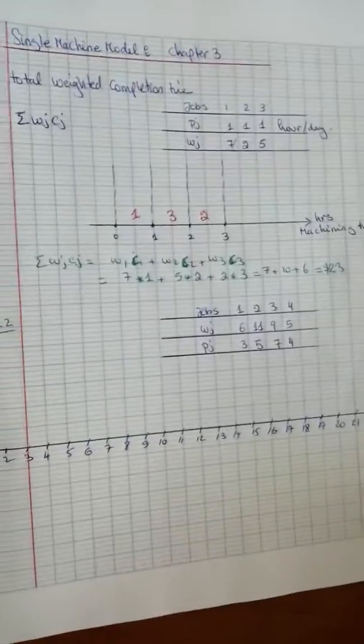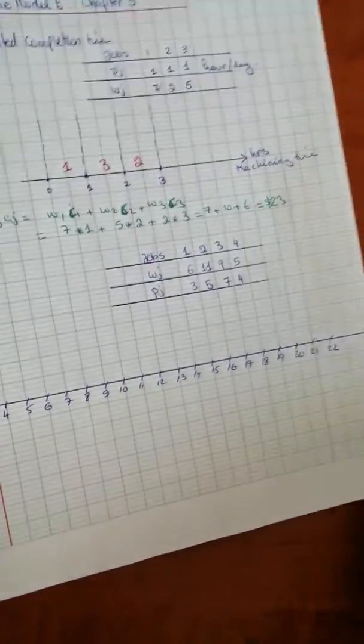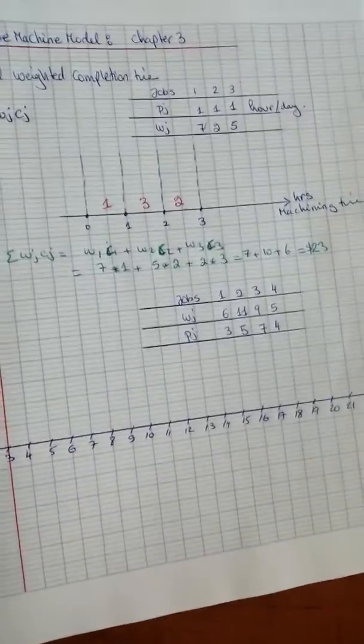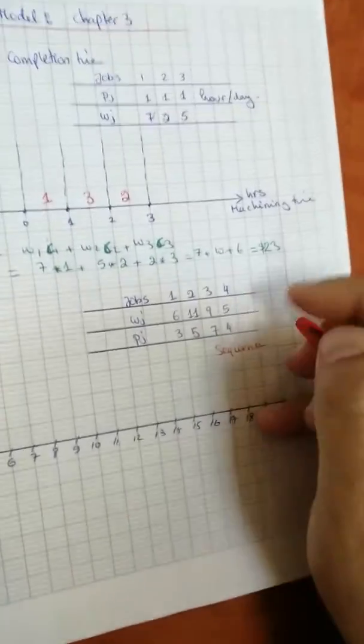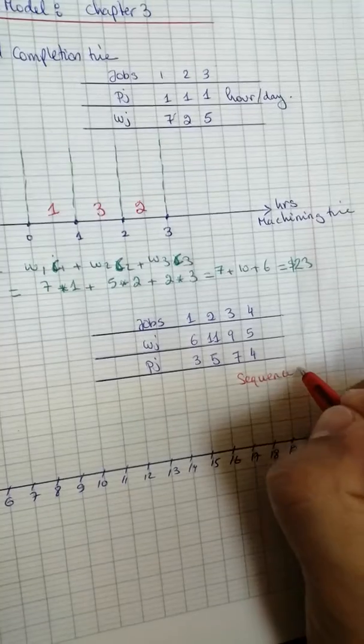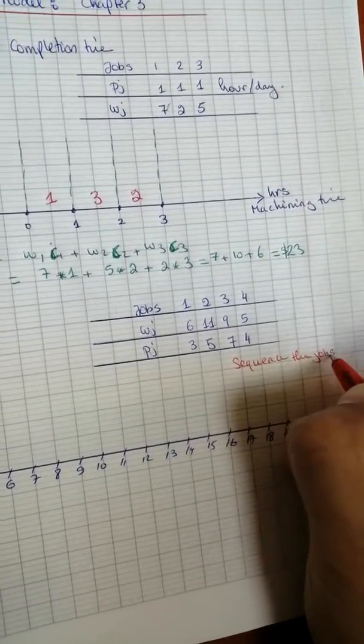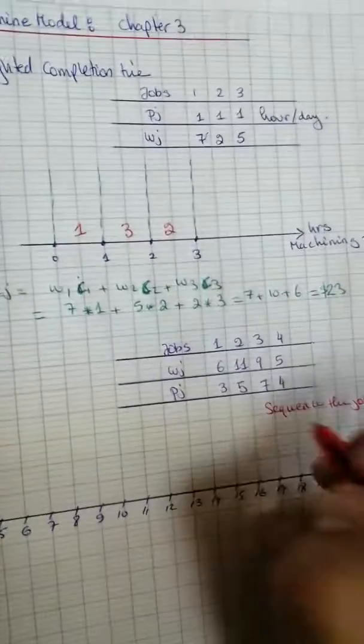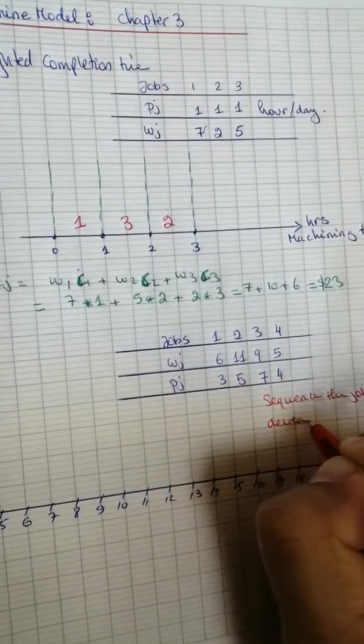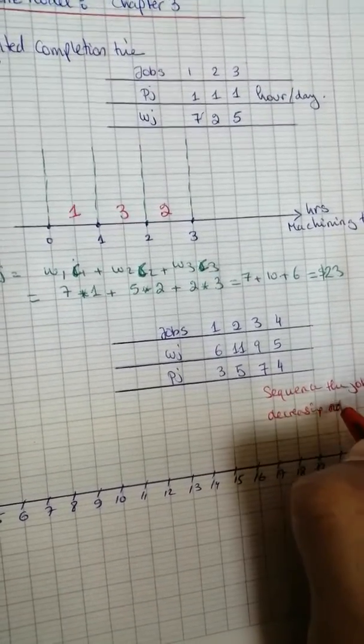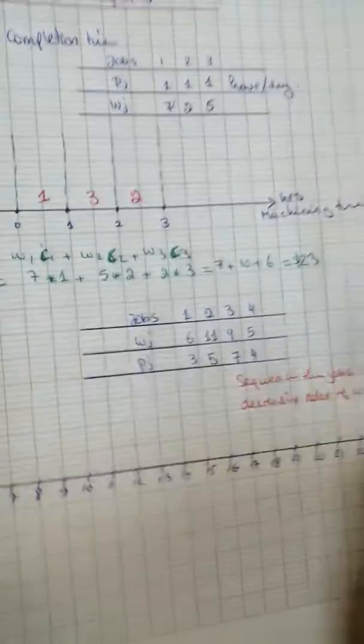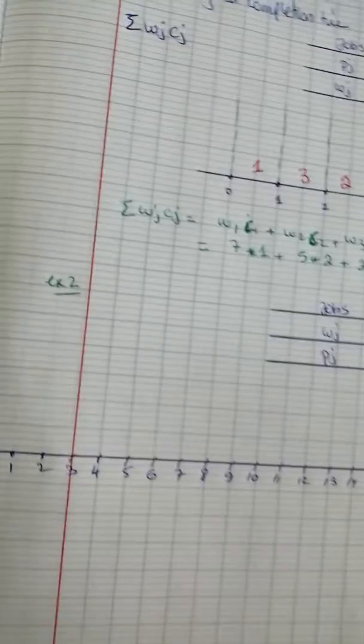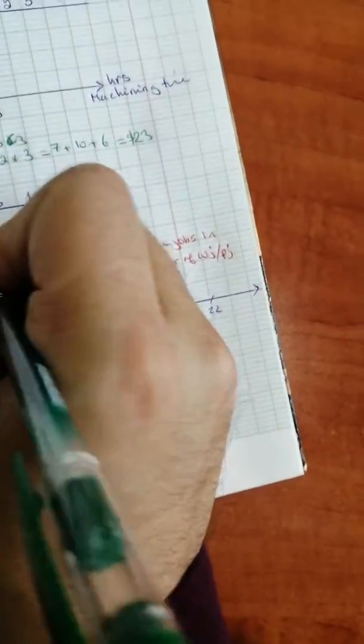...and different weights, the best way to do it is to sequence the jobs in decreasing order using wj divided by pj.